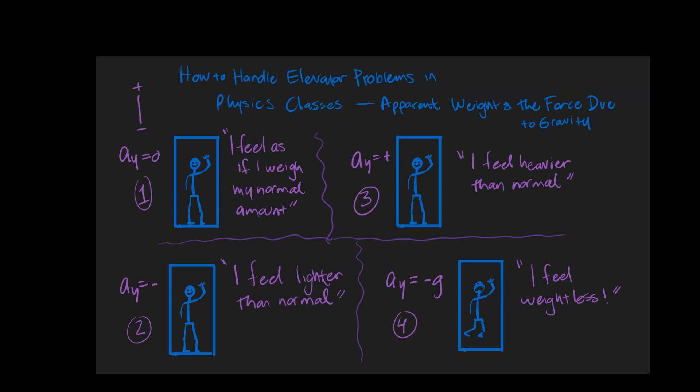Your apparent weight is greater than your actual weight. During the middle of the trip, you reach a constant speed going up in the elevator, and you feel as if you weigh your normal amount. Towards the end of the trip, as you get closer to your floor, the elevator starts to accelerate downwards, and you feel like you weigh less than normal. Does your weight actually change? The answer is no — you don't change the amount of mass you have during the trip. But your weight appears to be different at different parts of the trip, and we need to talk about how that works.